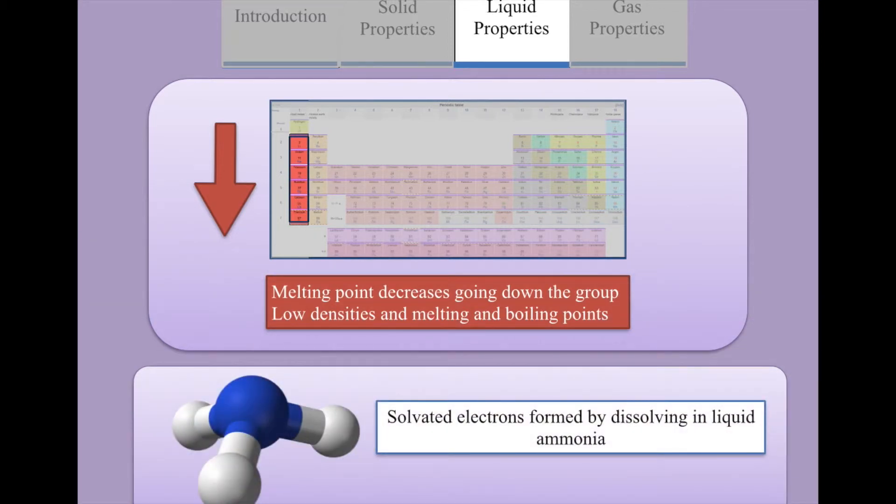Unlike most metals, the alkali metals dissolve slowly in liquid ammonia, forming hydrogen gas and the alkali metal amide.